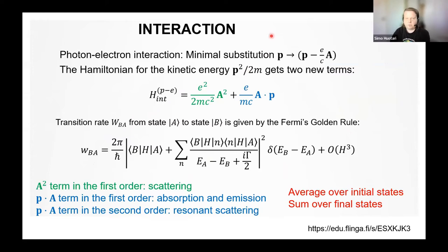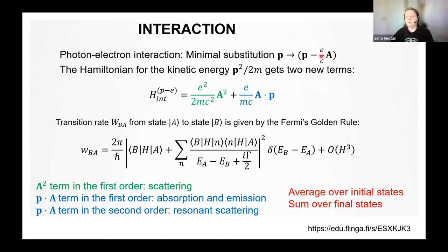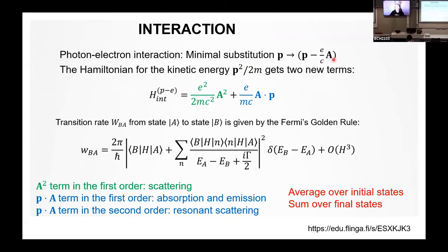The interaction is fundamentally driven by the interaction Hamiltonian. For the photon-electron interaction, we use the so-called minimal substitution, in which the momentum of the electron is replaced by something that contains the vector field potential of the photon field with a capital A. This means that the Hamiltonian for the kinetic energy of the electron gets two new terms. Squaring this in the kinetic energy term gives new terms related to A-squared and the dot product between A and the electron momentum.